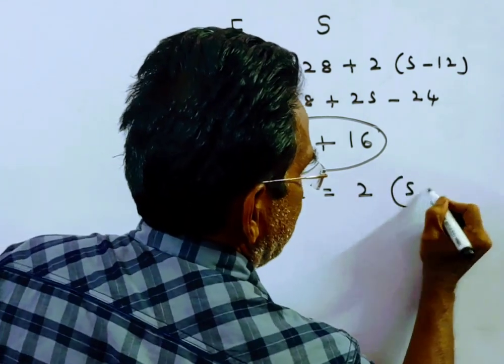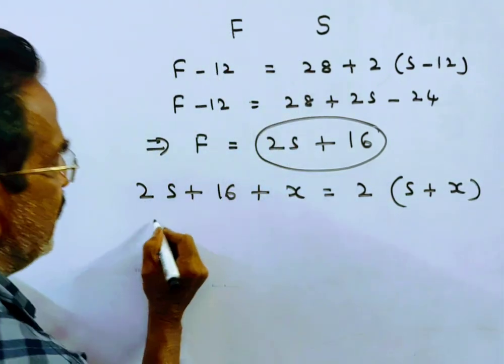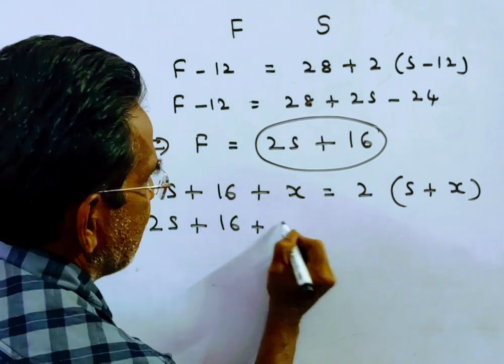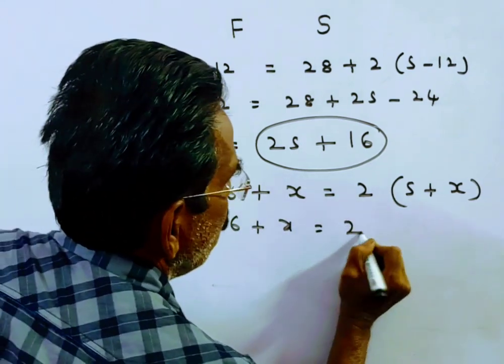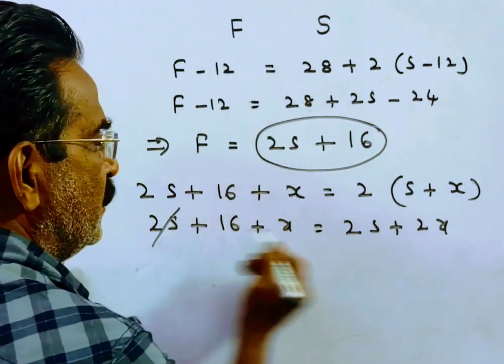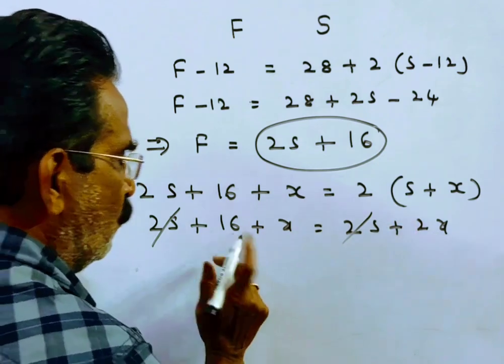Son will be S plus X. Friends, 2S plus 16 plus X is equal to 2S plus 2X. 2S gets cancelled. X is equal to 16.